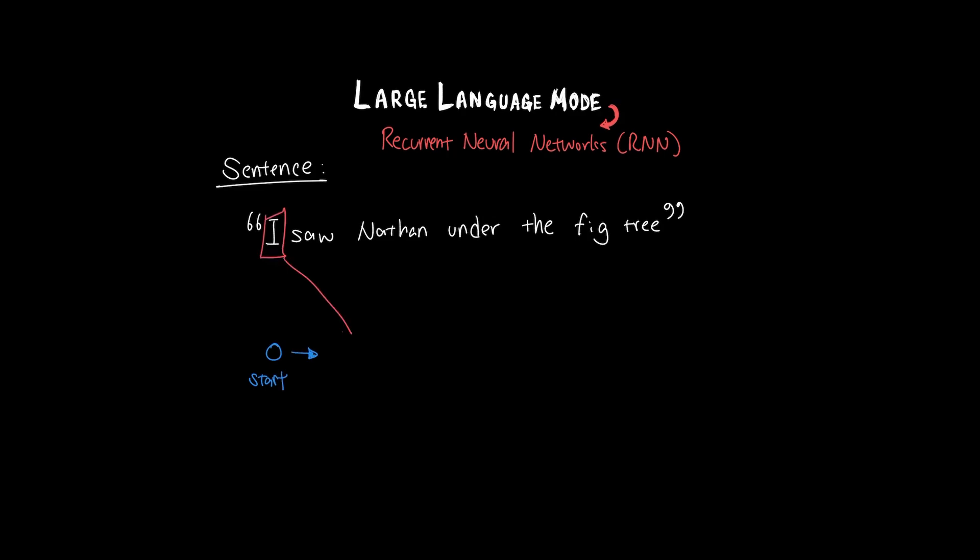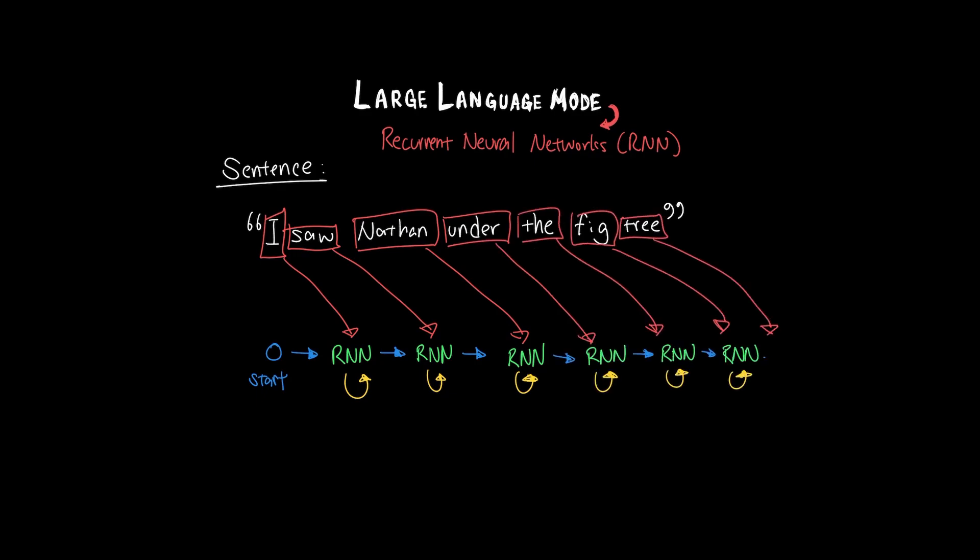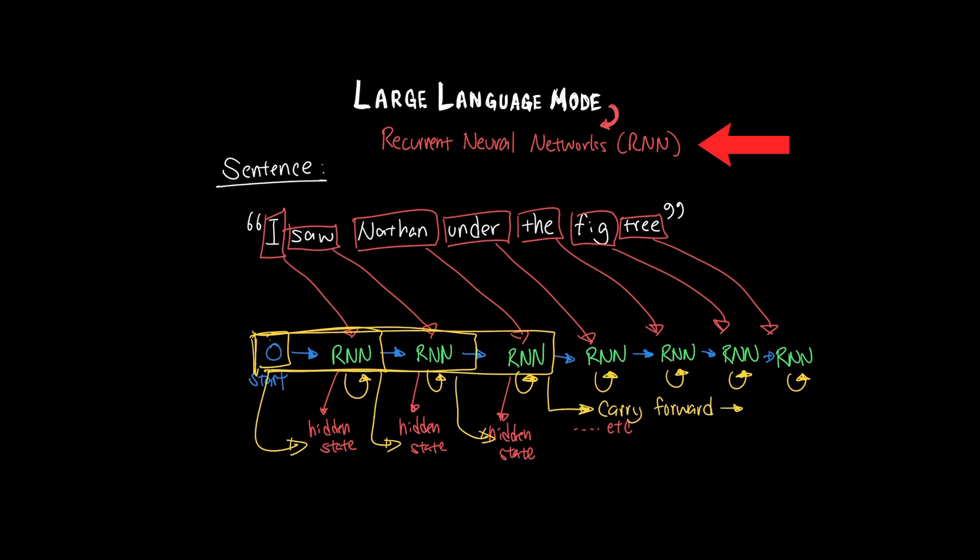Prior to Transformers, we approached this by reading the sentence word by word sequentially, meaning that instead of modeling how each word in a given sentence relates to every other word, it reads them word by word and stores information from previous tokens by using what's called a hidden state that acts like a memory that was carried forward to subsequent words. This was called Recurrent Neural Network.